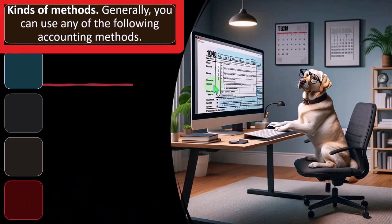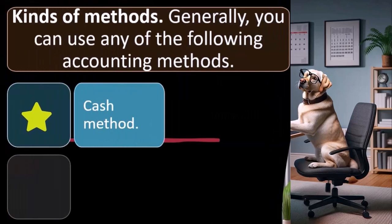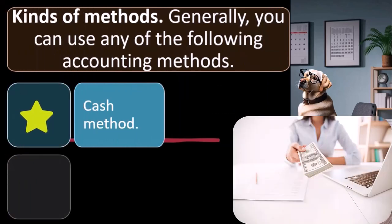So kinds of methods. Generally you can use any of the following accounting methods. Obviously you've got the cash-based method. The cash-based method is usually easier to do because we're going to recognize income when we receive income, money, cash. We're going to record the expenses when we spend money or cash.